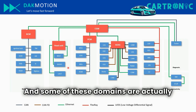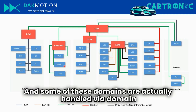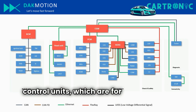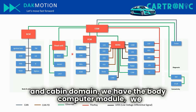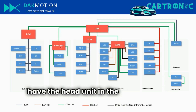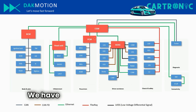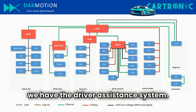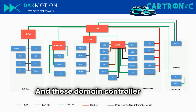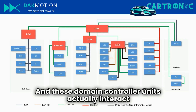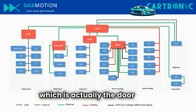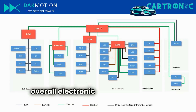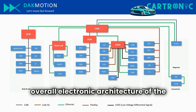Some of these domains are handled via domain control units. For example, in the body and cabin domain we have a body computer module; the head unit serves as the domain control unit in the infotainment domain; we have a powertrain control module and a driver assistance system. These domain controller units interact with each other via the central gateway, which is the door to the overall electronic architecture of the vehicle.